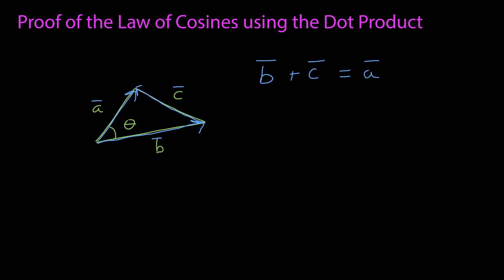Notice from the triangle, using the tail-to-tip method, that b plus c is equal to a. I put the tail of c at the tip of b, and then the tail of a goes from the tail of b to the tip of c.